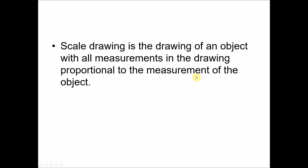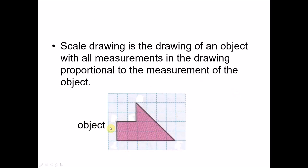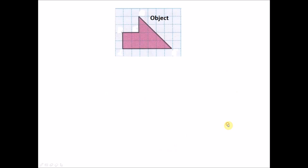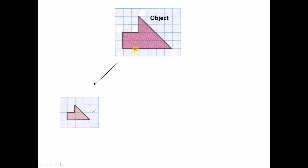What does 'proportional to the measurement of the object' mean? Let's look at an example. Say we have an object with a certain shape. When I draw it, I can draw it smaller than the original. Here the original sides are one and two units, but in the drawing I draw only half — one unit each. The same applies to the other sides: six units becomes three units, which is half. So every side is half of the original.